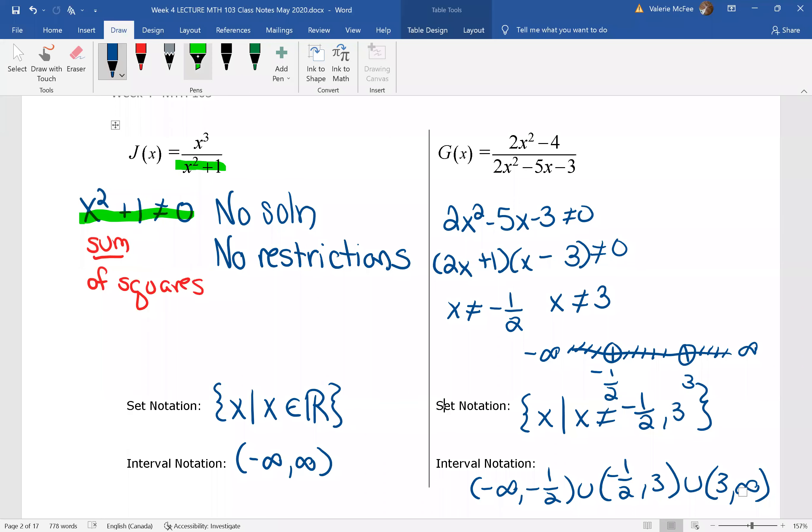And for our last example, we again look at the denominator - the denominator cannot equal zero. And so we factored the trinomial and found two restrictions: x cannot equal negative one half or three. And there you see it written using both set notation and interval notation.